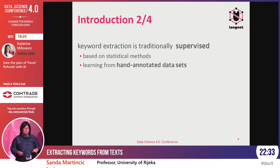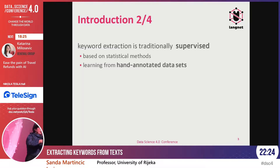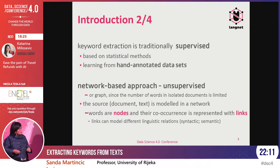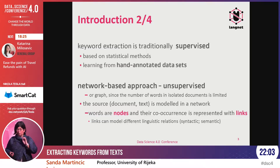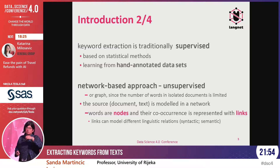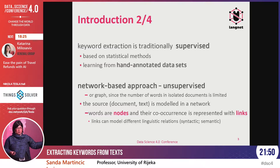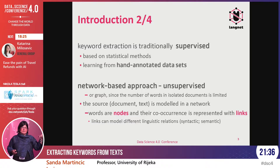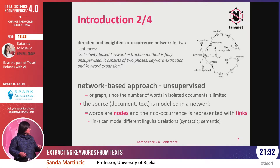Traditionally, keyword extraction is done with data mining and machine learning in a supervised way, where you need a set of documents and a set of keywords and train the model to classify new documents. But we are doing this the other way — we are trying to do it in an unsupervised manner. We rely on something popular in social network analysis: a network-based approach, which is unsupervised and based on a simple principle. Instead of dealing with raw text, we construct a graph or network of that text, where words in the text are nodes in the network.